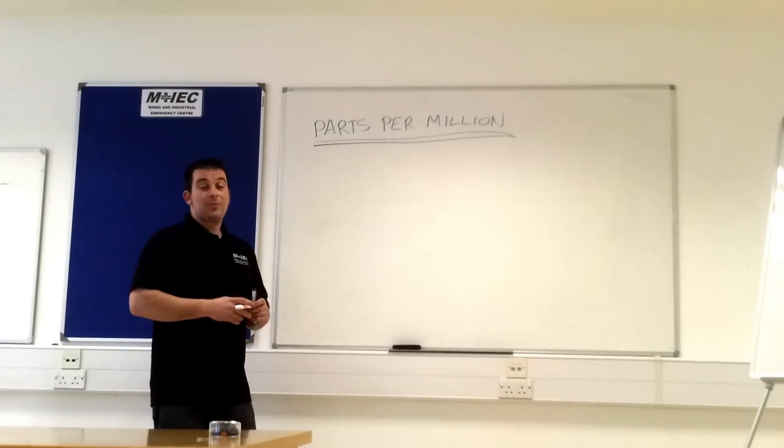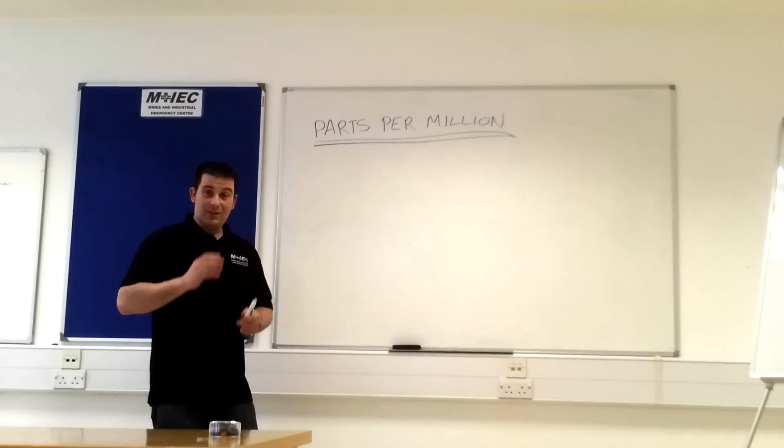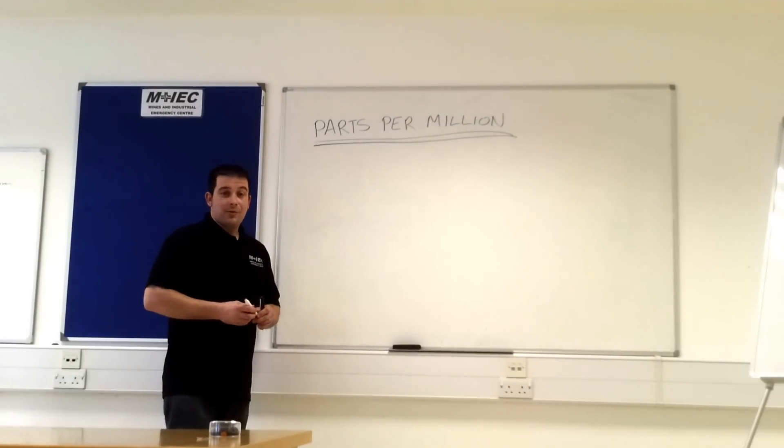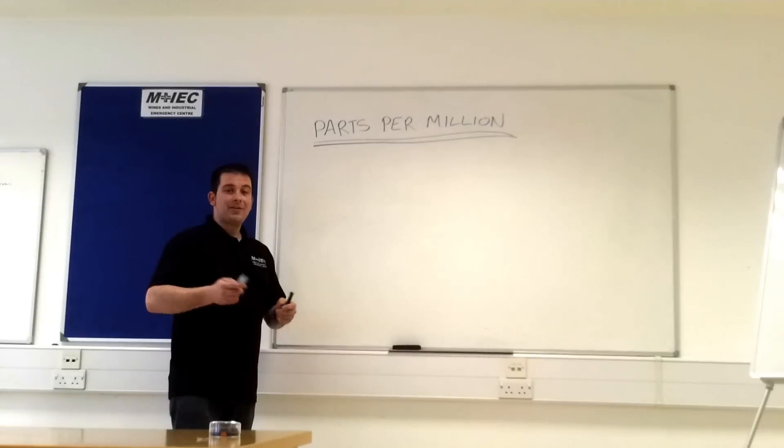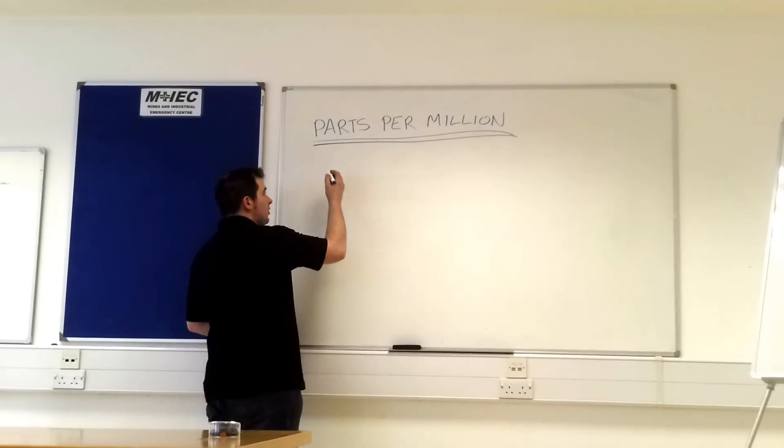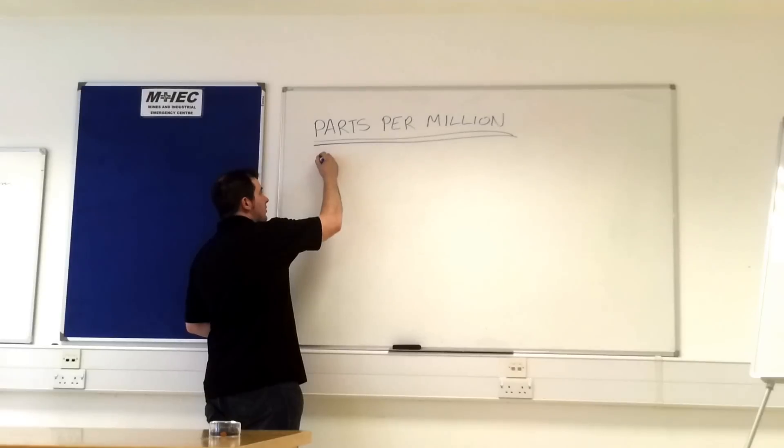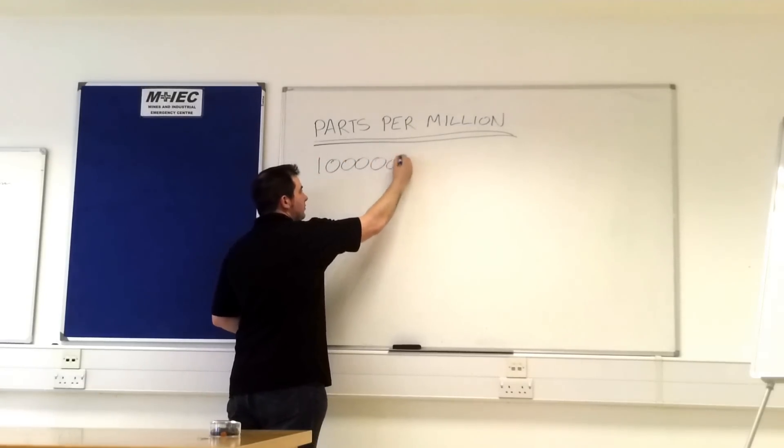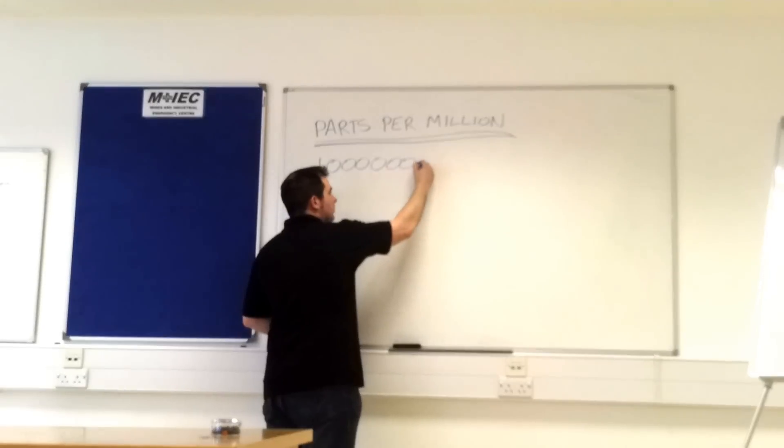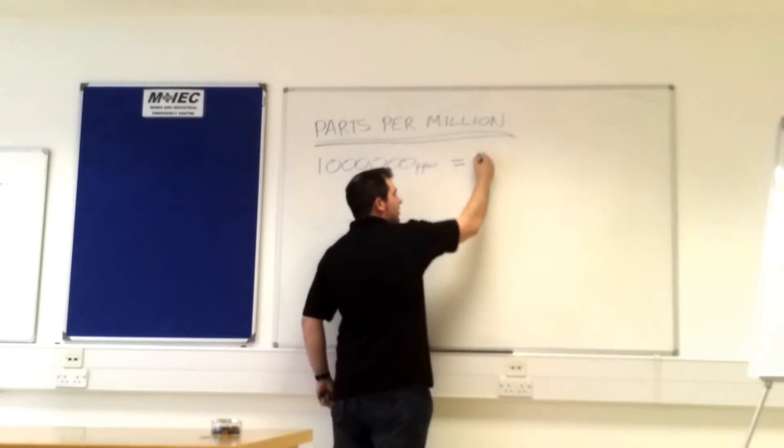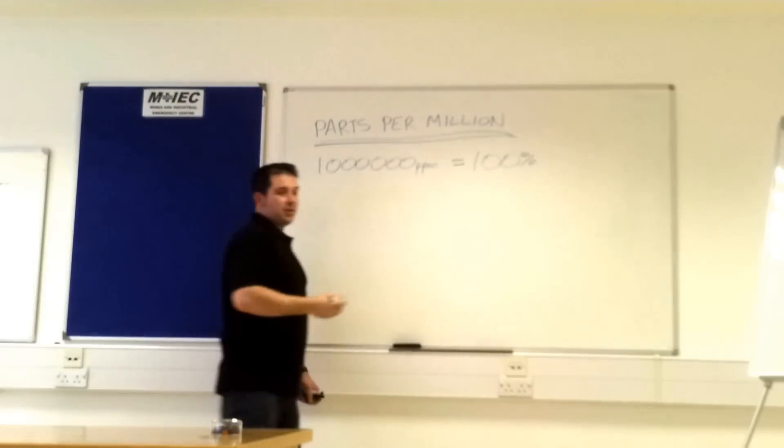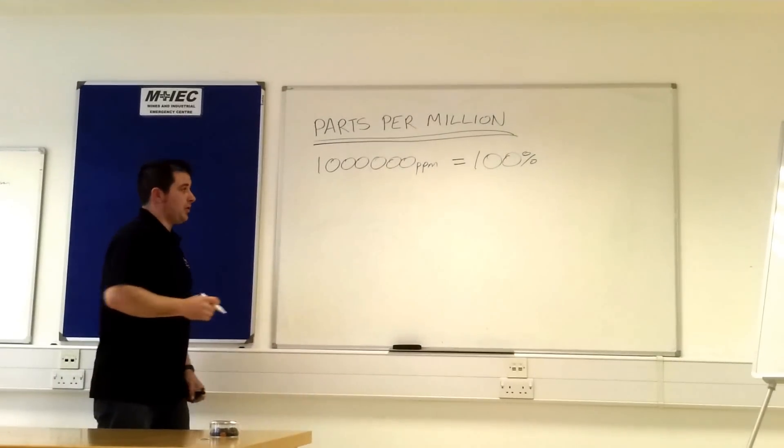Right, by request, a little explanation of parts per million and how we convert from percentage to parts per million. First off, why don't we use the parts per million scale? Well, to make the figures a little bit more manageable. First off, let's have a look. Right, if we have one million parts per million, that is 100%. A million parts per million is everything, which is 100%.